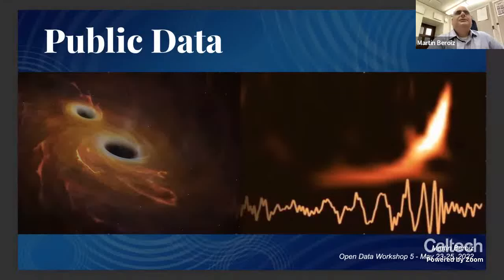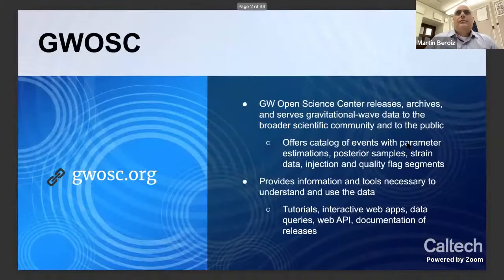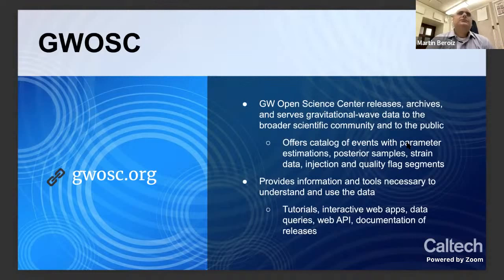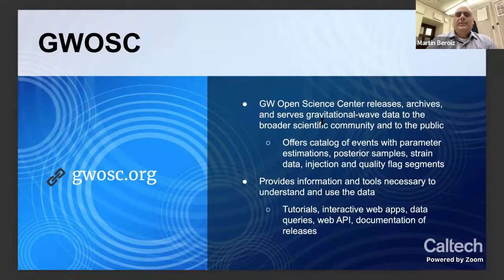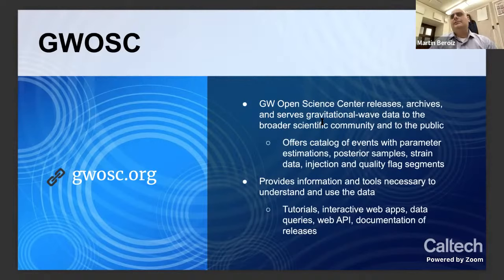Let's talk today about what type of data you can find among the publicly released gravitational wave data. My name is Martin. I work at the Gravitational Wave Open Science Center, and basically what we do at GWOSC is release, archive, and serve gravitational wave data to the scientific community and the public in general. We offer a catalog of events with parameter estimations, posterior samples, strain data, and data quality flag segments.